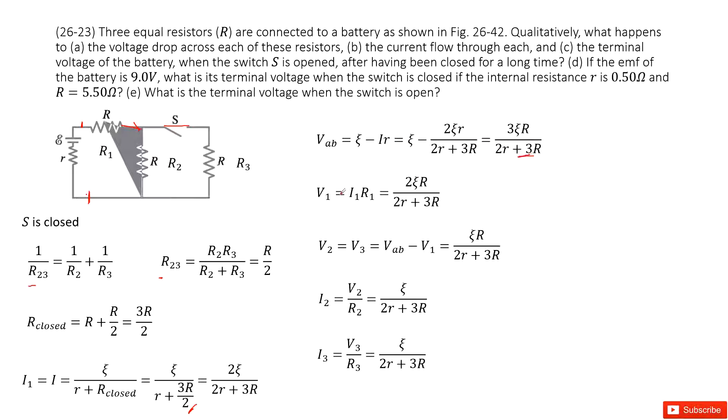And then we can see the voltage across the R1, so V1 equal to I1 times R1. So input I1 and R1 is just R. And V2 and V3 equal to the VAB minus V1, because they are in parallel connection, potential difference equals. So V2 equal to V3 equal to VAB minus V1. And so we can get the current for I2 is V2 over R2, I3 is V3 over R3. This is for S is closed.